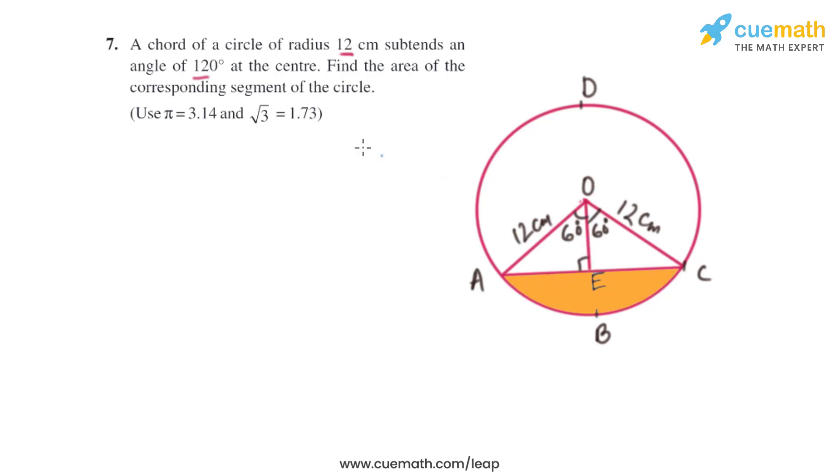To find the area of triangle OAC, we need the height OE and the base AC. We'll draw perpendicular OE from the center, and it will bisect AC, so AE will equal EC.